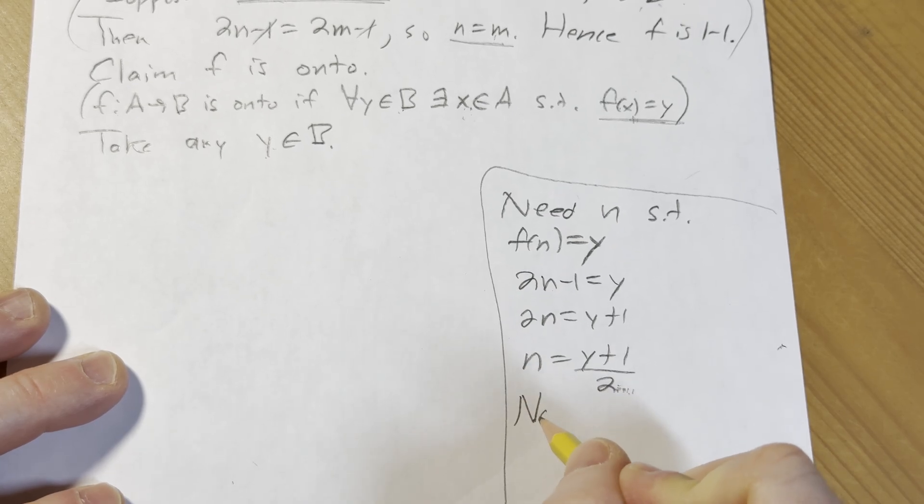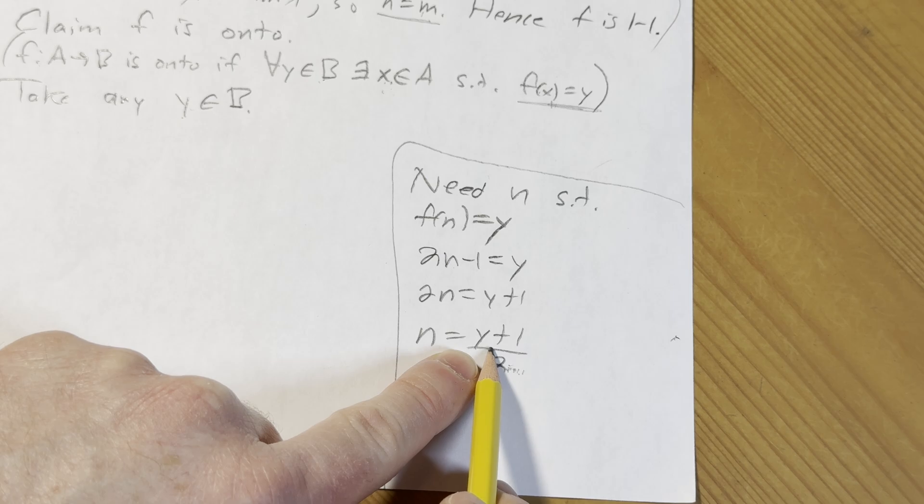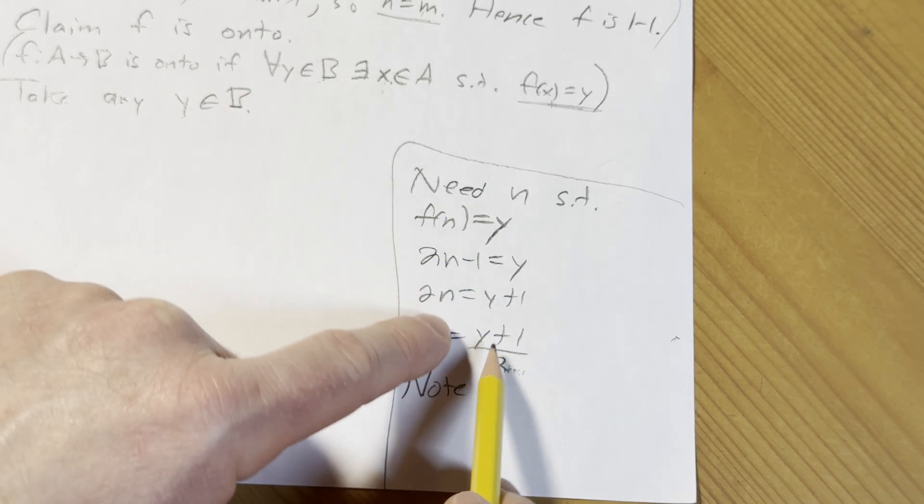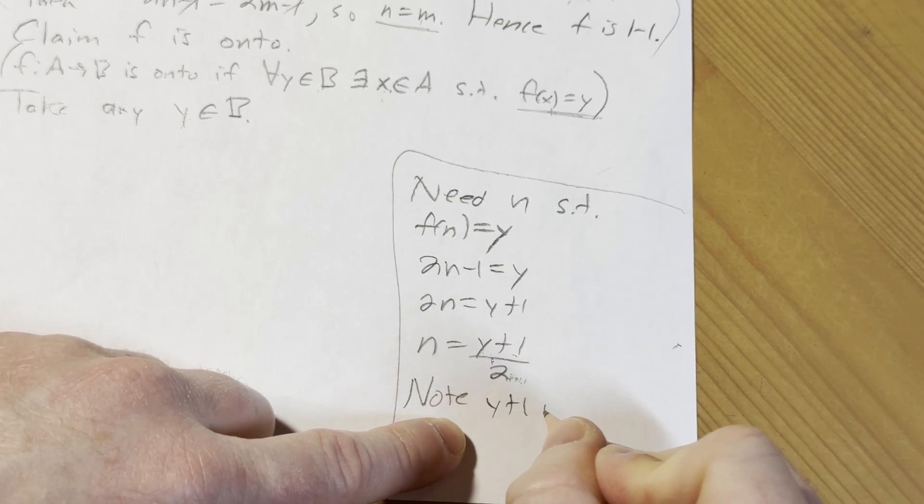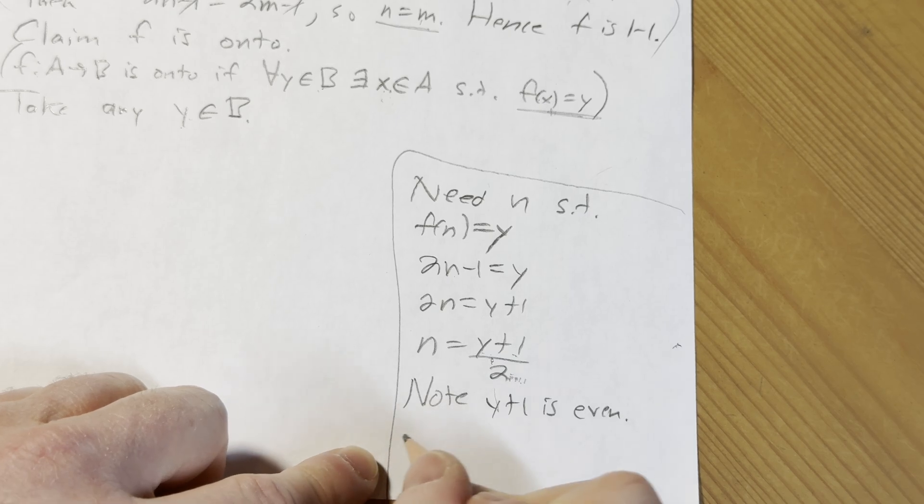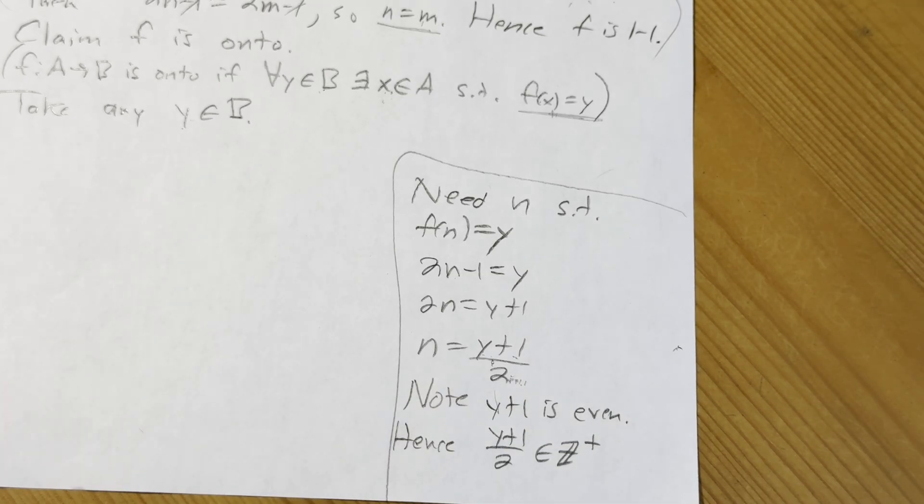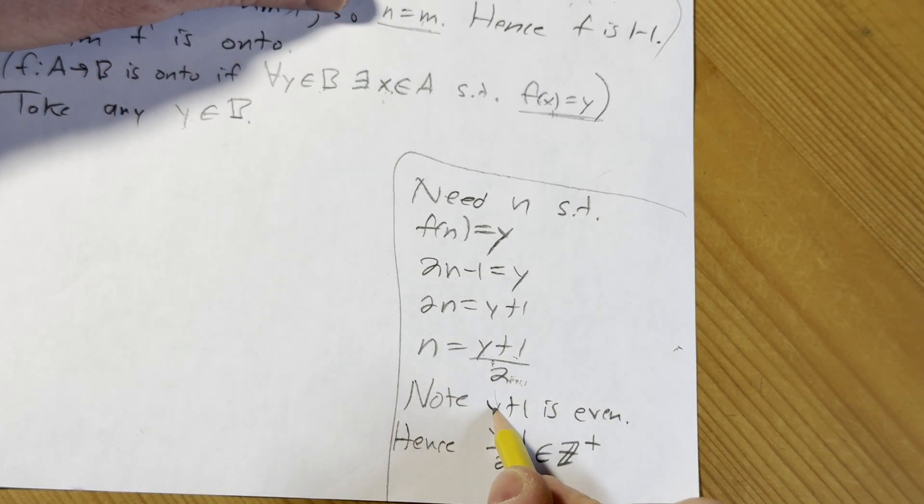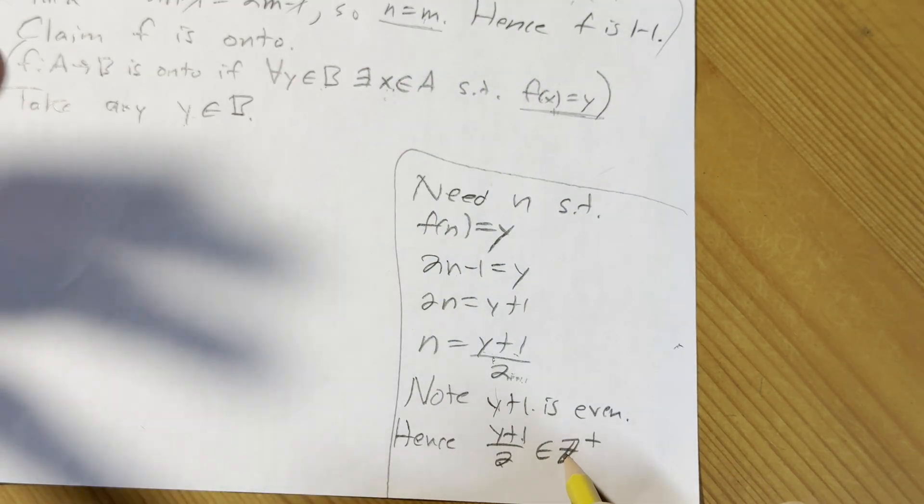So note, y is odd because y is in the set of odd integers. When you add an odd number to 1, you're going to get even. So y plus 1 is even. And when you divide it by 2, hence y plus 1 over 2 is a positive integer. Because y is odd and when you add 1 to it, it becomes even. So you can write it as 2 times k. 2 times k over 2 is just k, which is a positive integer.